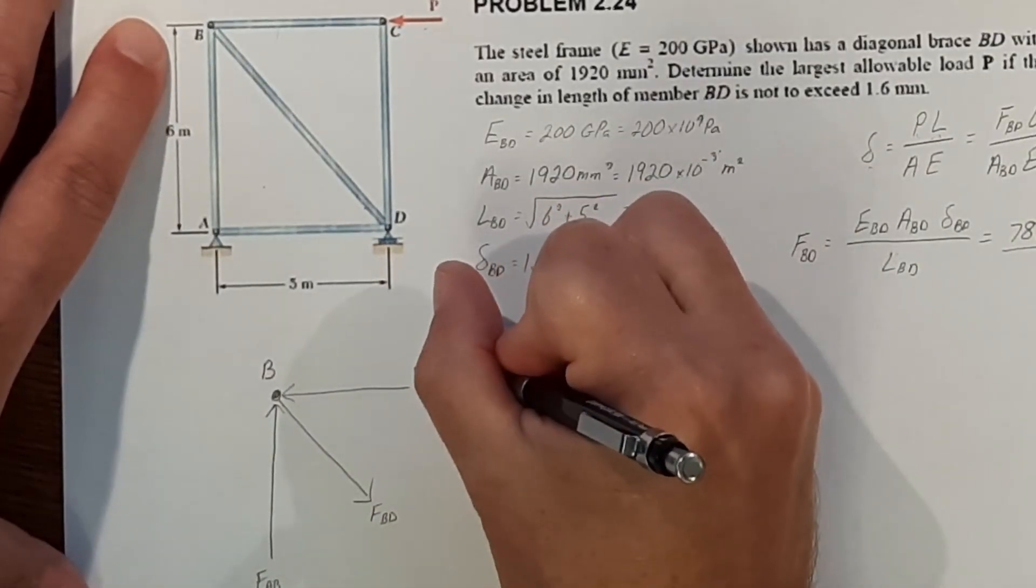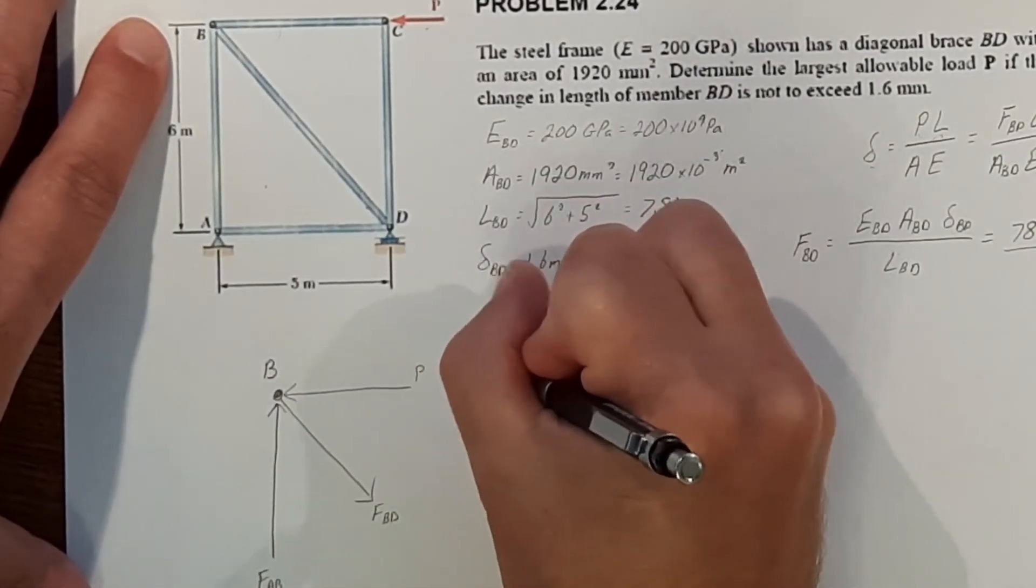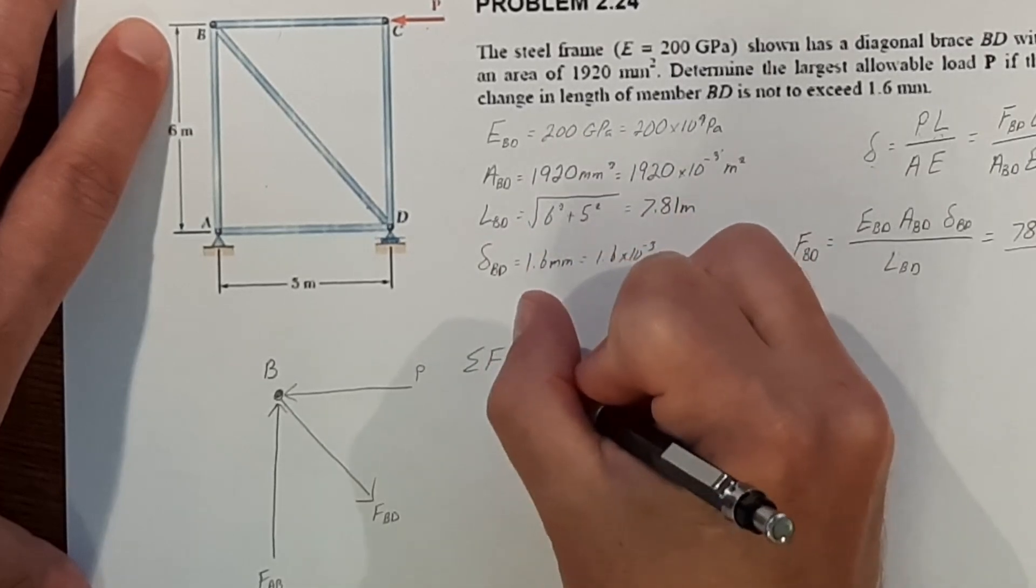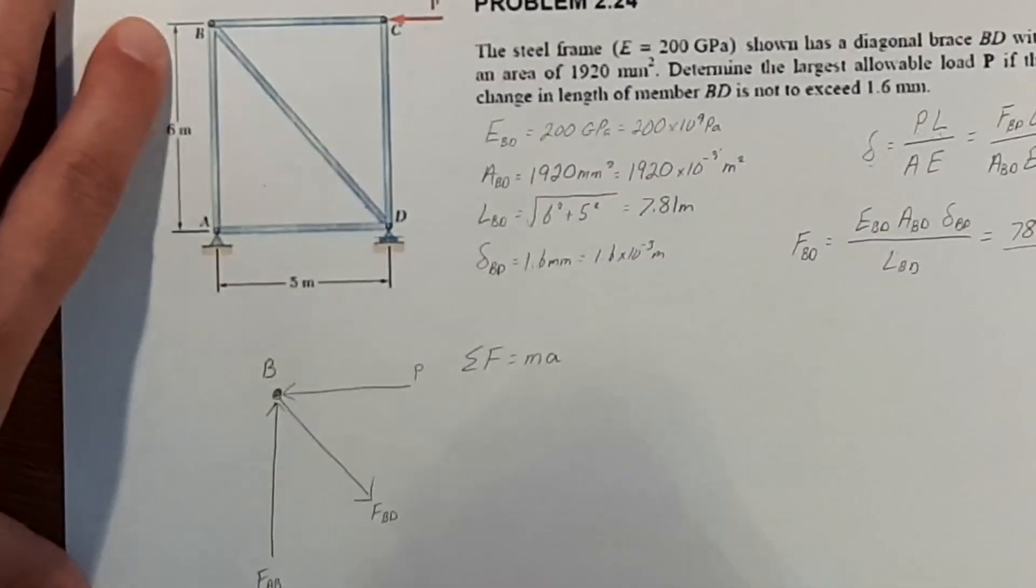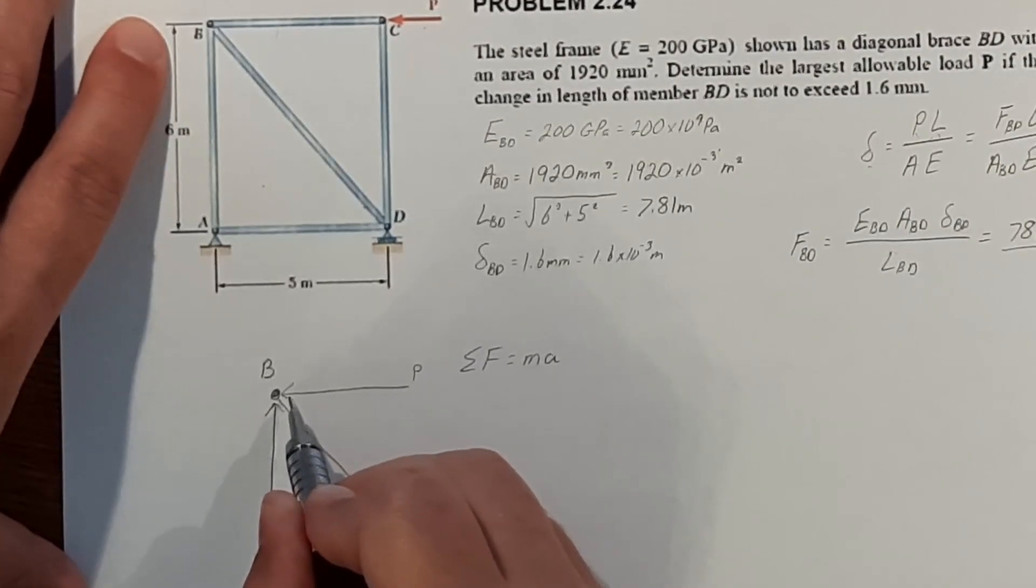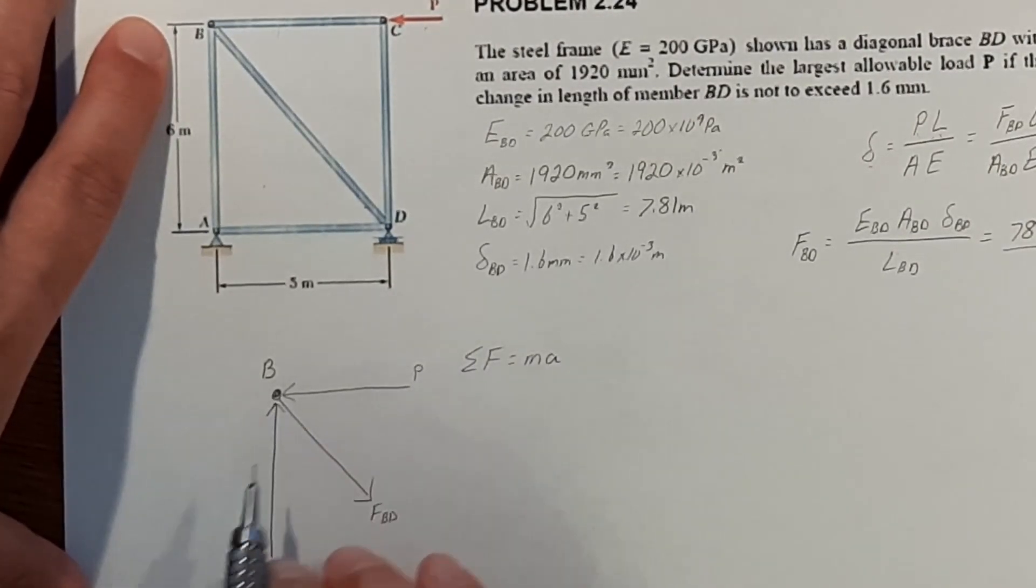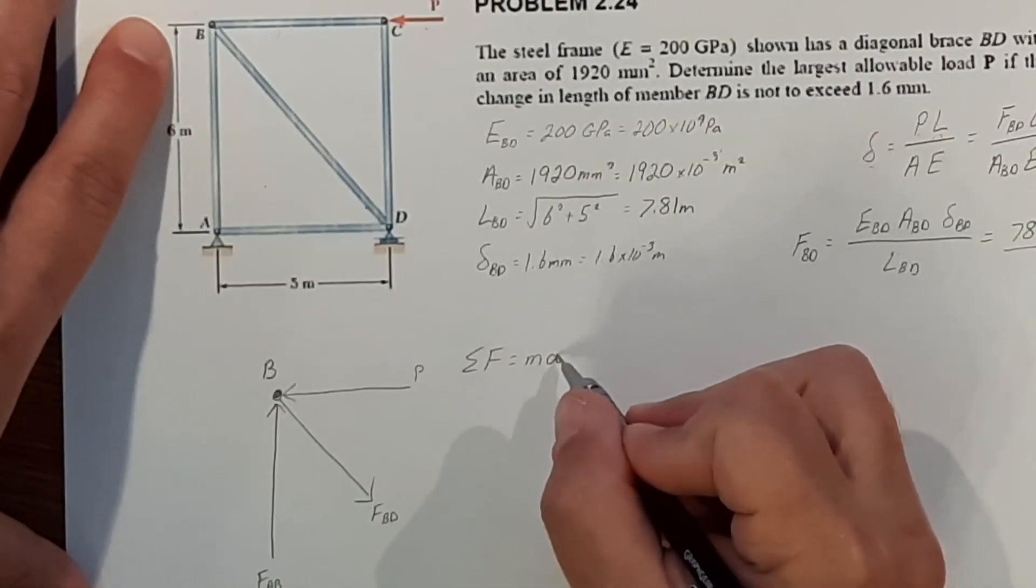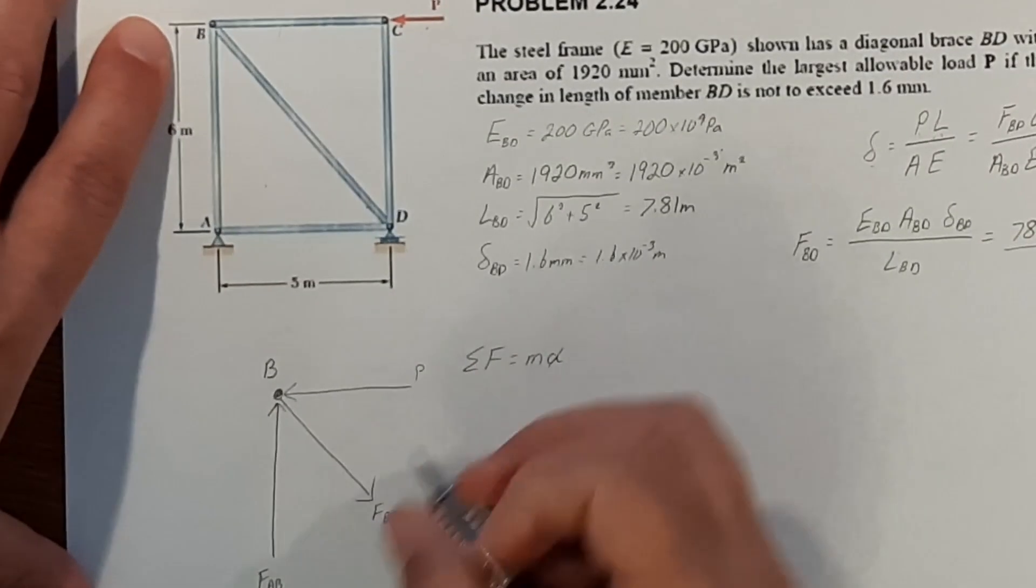And knowing that the sum of forces is equal to mass times acceleration, we know everything is stationary. It's static. Nothing is moving here, so it all has to equal zero because our acceleration is zero.